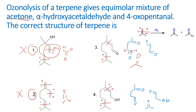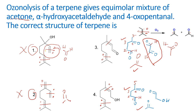Numbering the carbon chain as one, two, three, four, and five, this fragment is actually 4-oxopentanol. The same 4-oxopentanol is also formed in option four. Acetone is common to both options three and four. The only differentiator is the remaining fragment: option three gives a CHO group without a hydroxyl, whereas option four gives the alpha-hydroxyacetaldehyde structure. Therefore, the correct option is four.